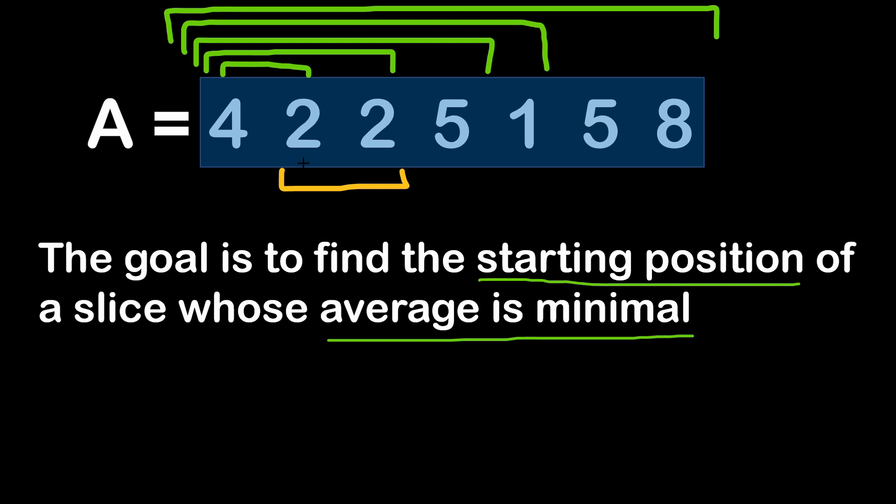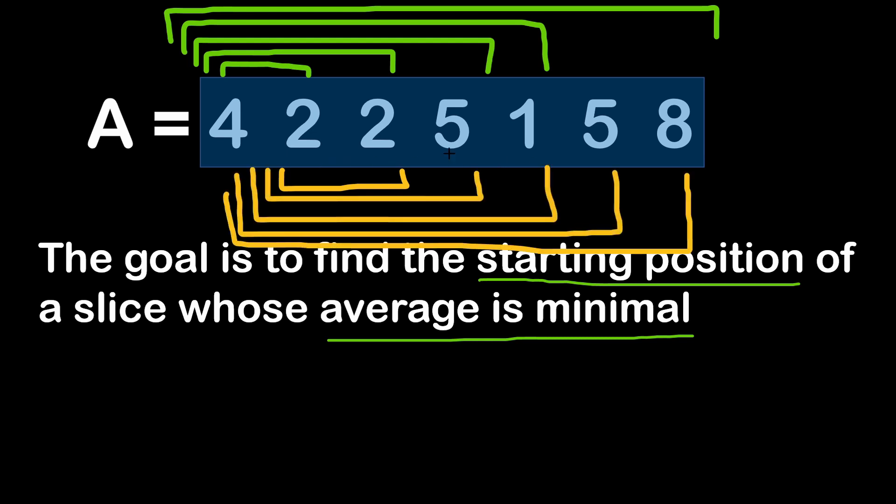Then we move on to the next starting position, number 2. So you have a slice 2, 2, then 2, 2, 5, then 2, 2, 5, 1, and so on. And we keep moving on the starting position and testing all the averages of all the possible slices.